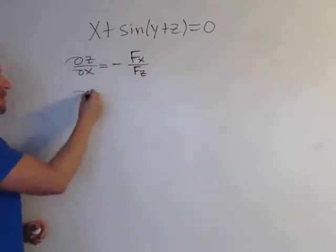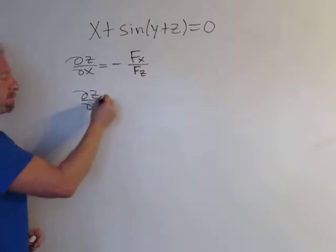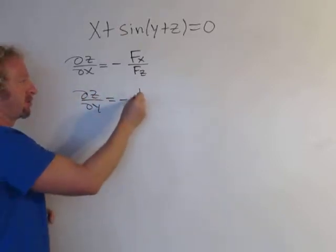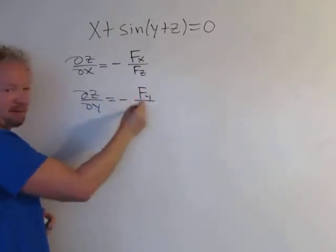The other formula ∂z/∂y also has a minus sign. Here you have a partial with respect to y, and here you have a partial with respect to z.